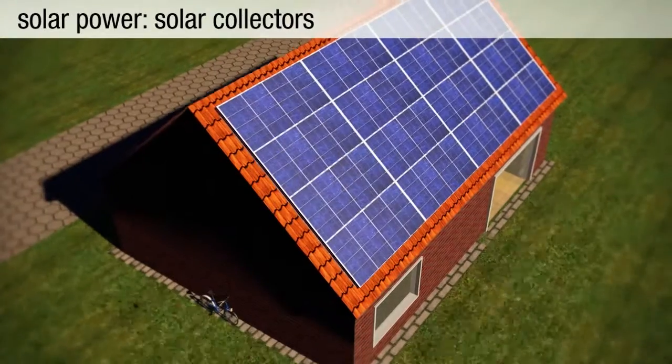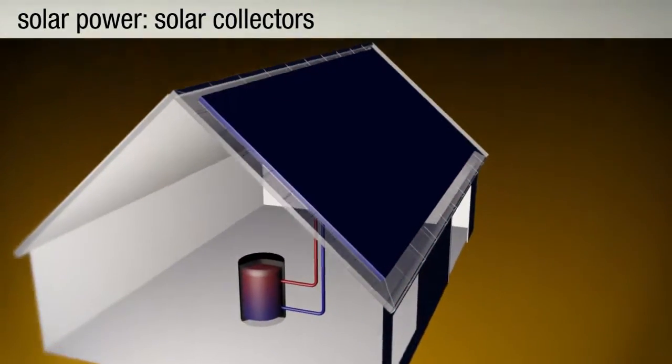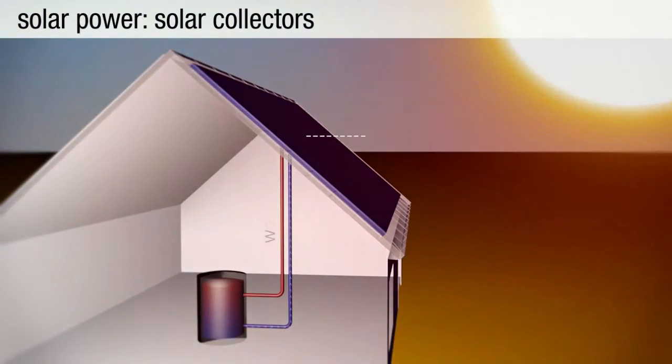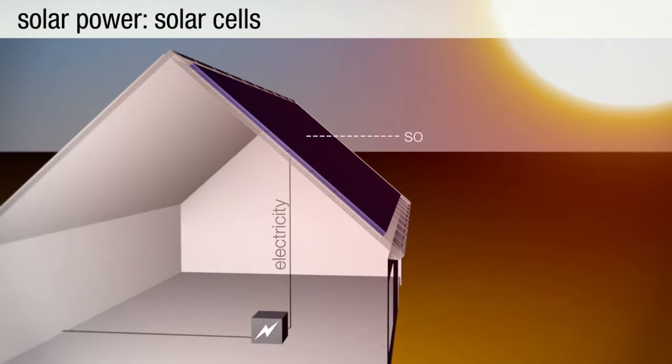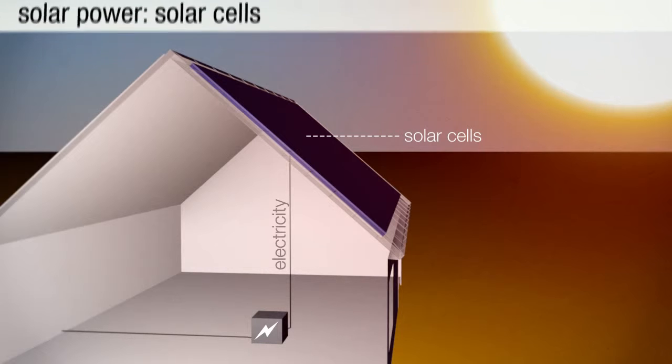There are two major forms of solar energy. Solar collectors heat a transmission medium with the sun's energy. On a small scale, this includes hot water heaters for individual households. On a large scale, concentrated solar power plants produce electricity. Solar photovoltaic cells convert the sun's rays directly into electricity. These systems are often installed on rooftops.